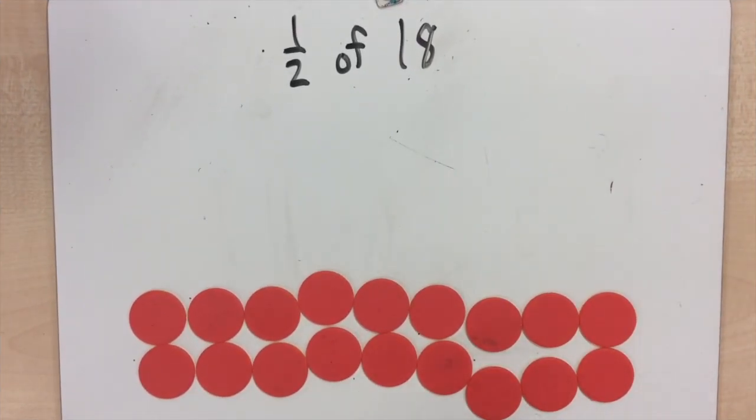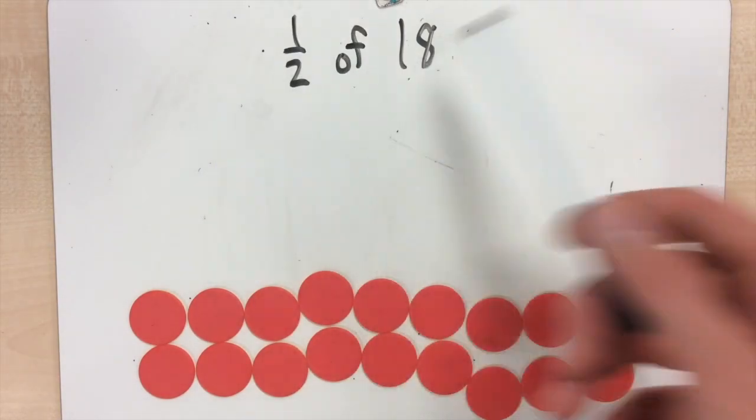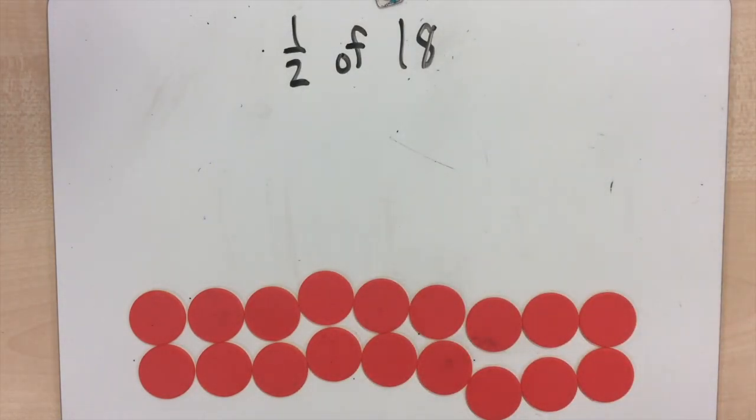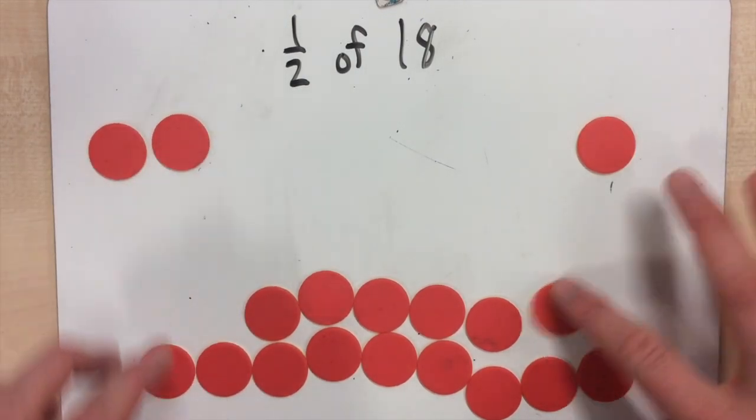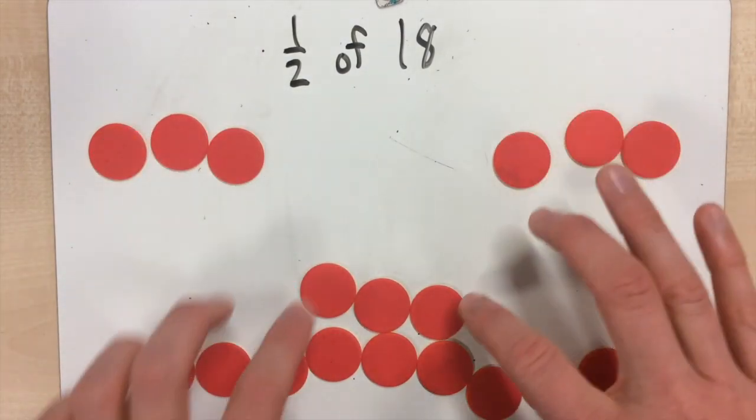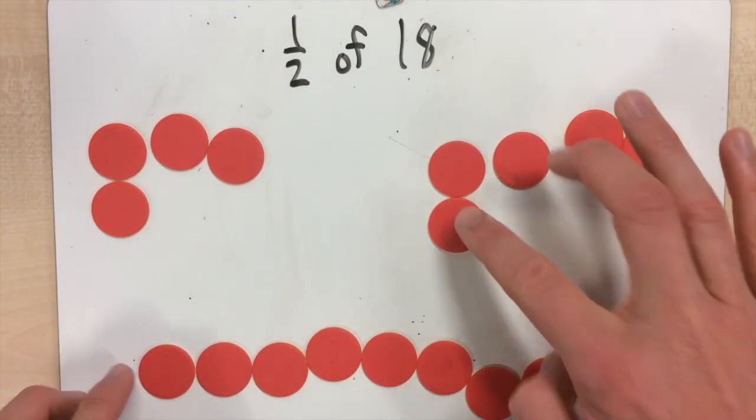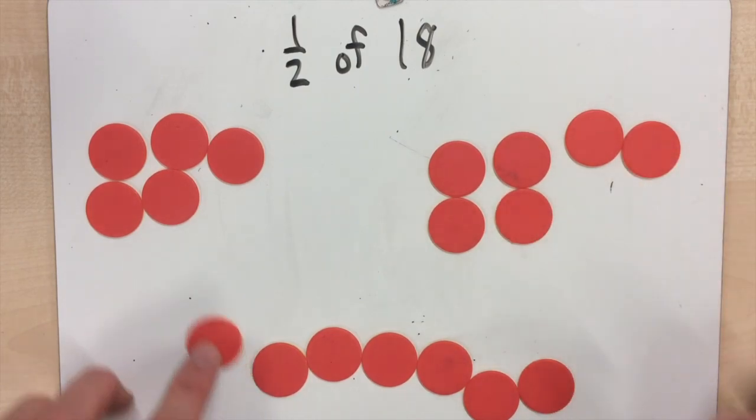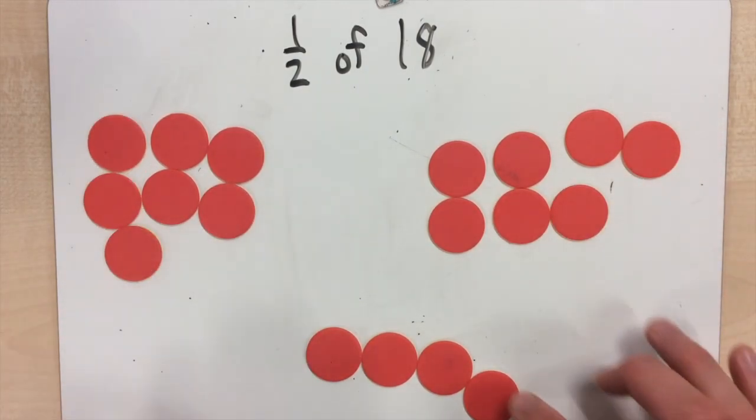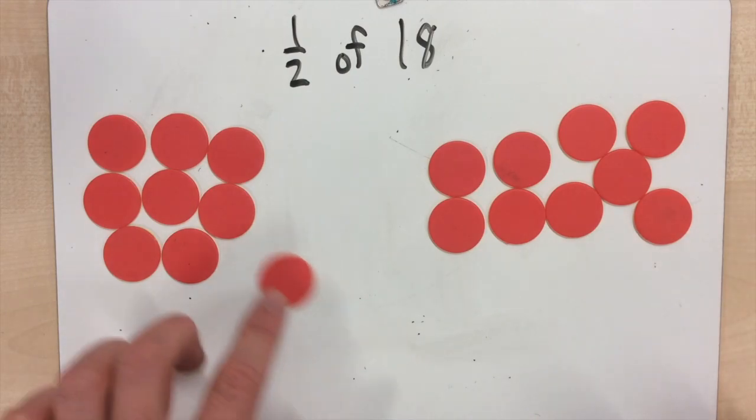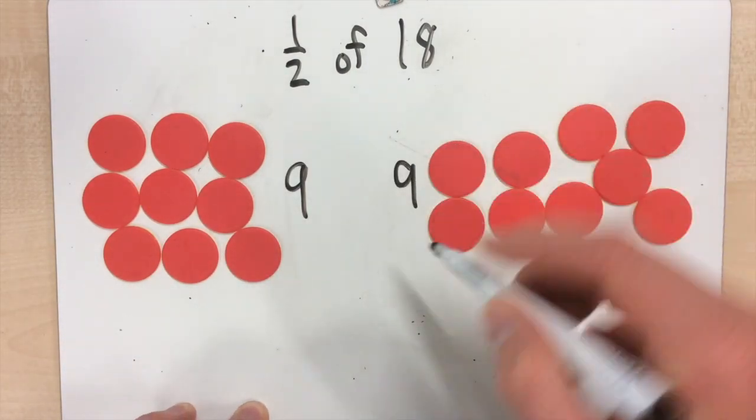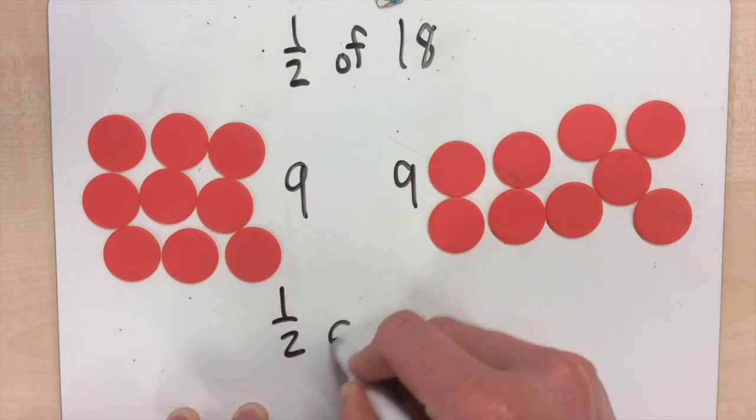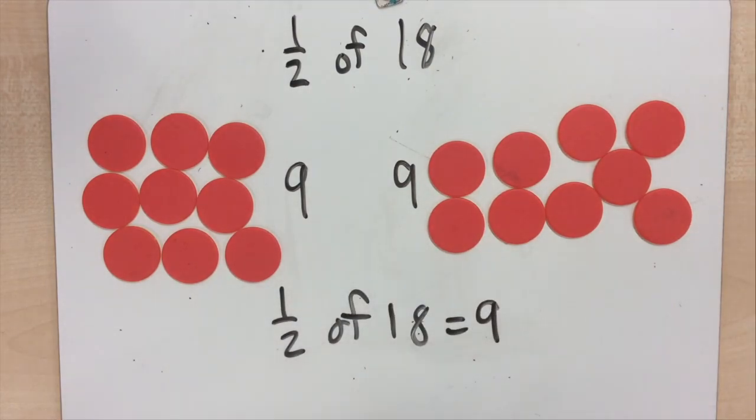Let's try a little bit bigger of a number. We've got 1 half of 18. So as we saw in the first question, we're going to make 2 groups out of our 18. We're going to count 1, 1, 2, 2, 3, 3, 4, 4, 5, 5, 6, 6, 7, 7, 8, 8, 9, 9. So there are 9 in each group. So half of 18 equals 9.